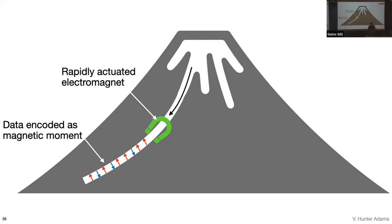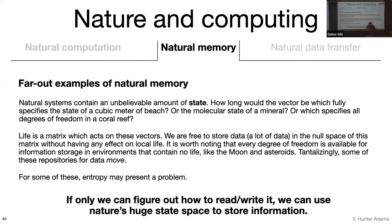There also exist more far-out examples of where this idea could lead. Everywhere in nature, nature has an unbelievable amount of state—an unbelievable amount of degrees of freedom. We talked about the degrees of freedom in a single cubic meter of beach. How many are there in the molecular state of a mineral? How many in a coral reef? If your model for life is as a matrix acting on a vector containing all these degrees of freedom, we are free to store data in the null space of that matrix without any adverse effect on local life. If only we can figure out how to read and write this, we can use nature's huge state space to store information.